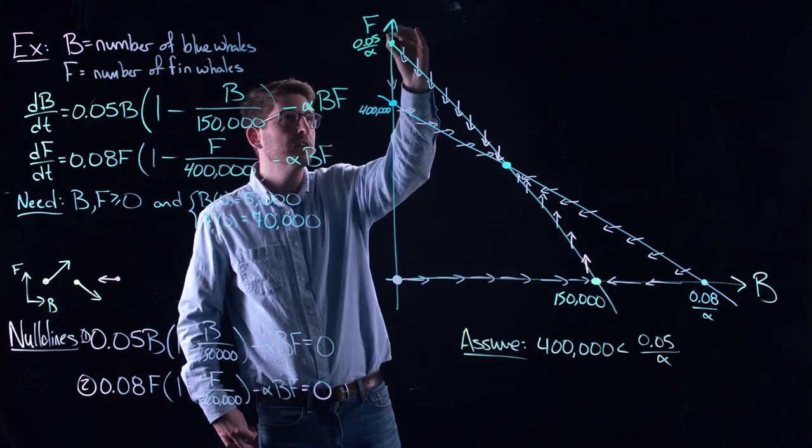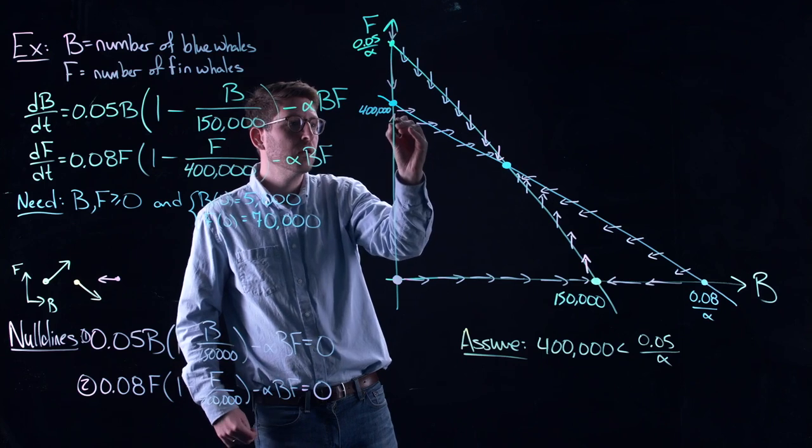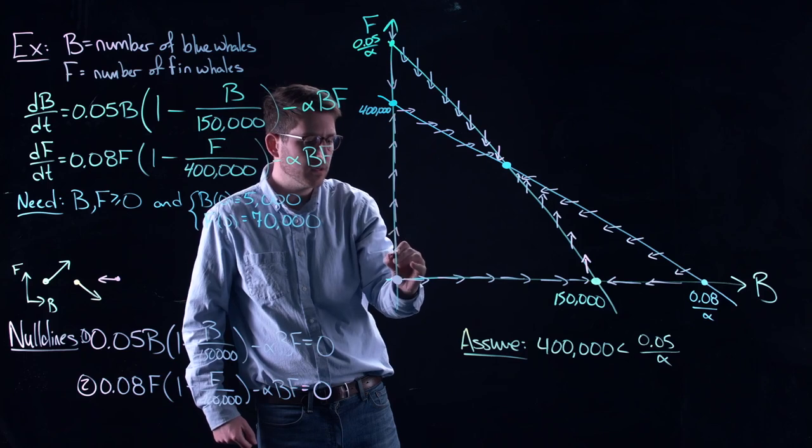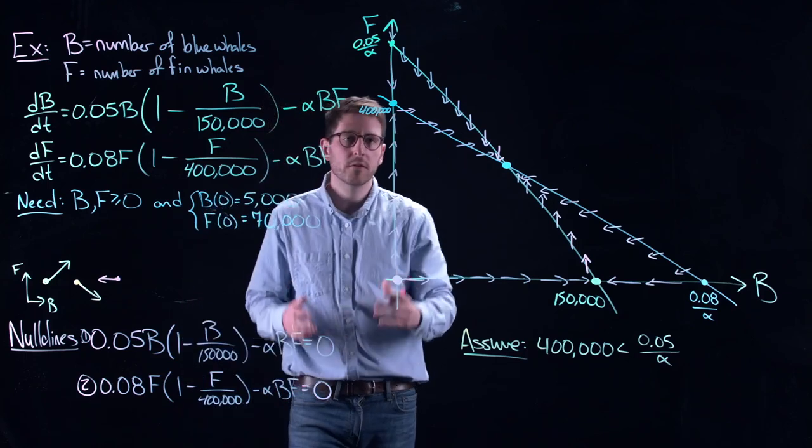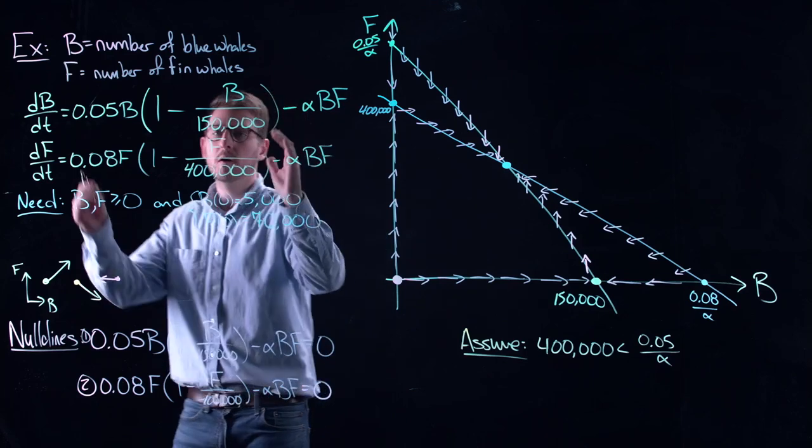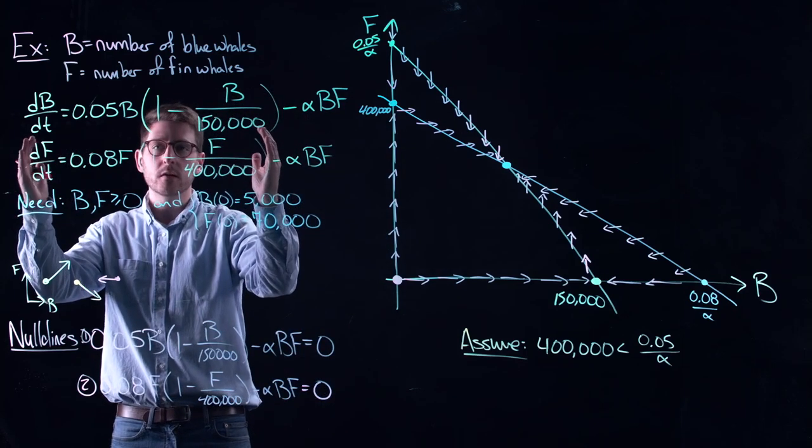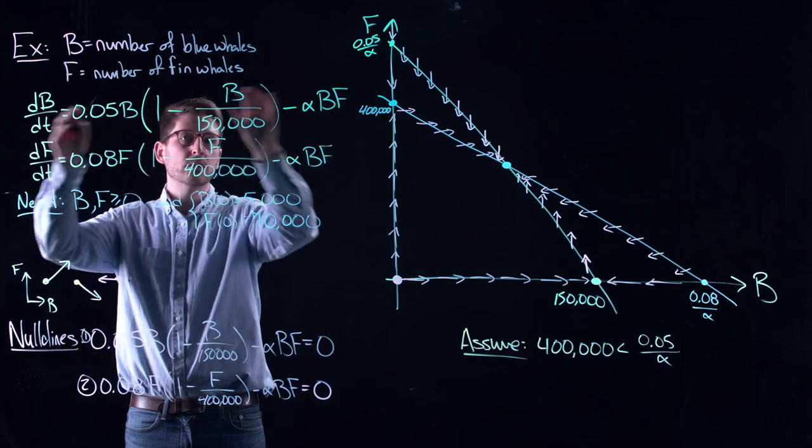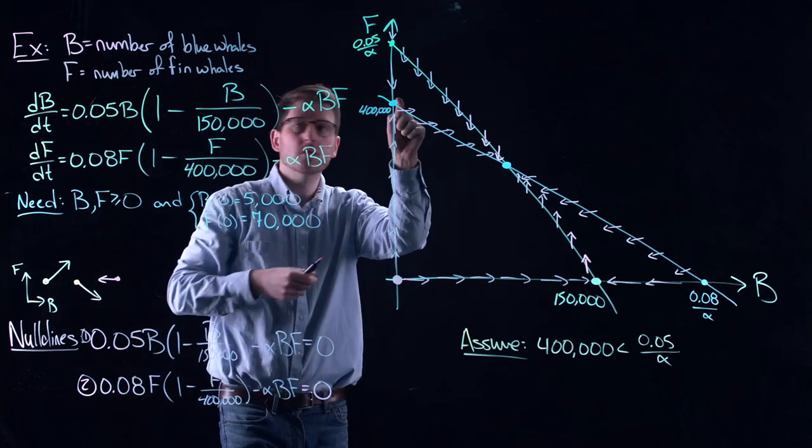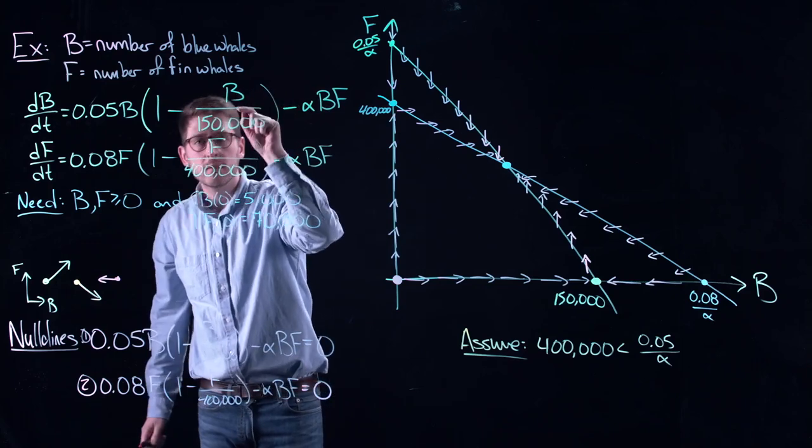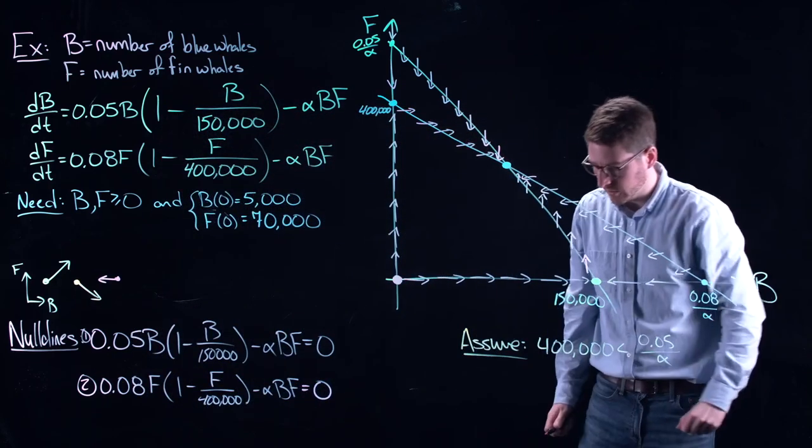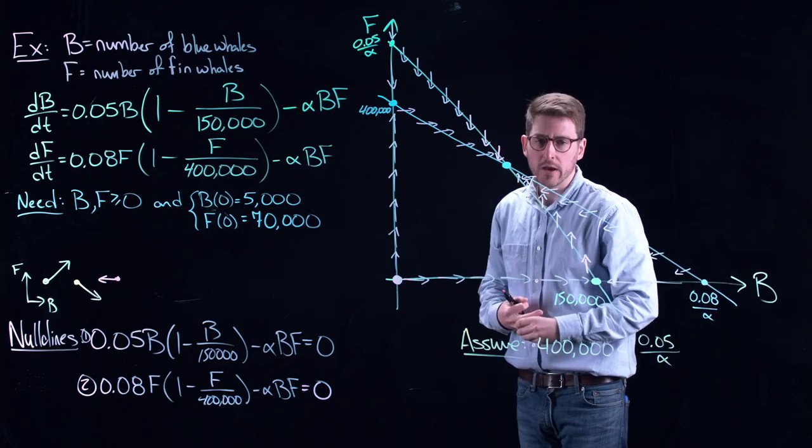Similarly, I am coming down when I am on this nullcline. I am always moving towards the carrying capacity of the fin whales. So, again, if there is no blue whales to compete with them, B is equal to 0. All I am left with is a single equation. All of this is equal to 0. And I am stuck on the F axis. And everybody is moving in towards that carrying capacity. The whales will grow until they can no longer support their own population.